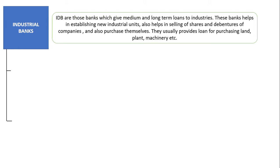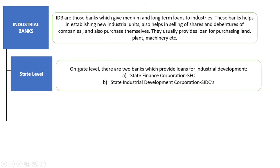At the state level, there are two banks that provide loans for industrial development: the State Finance Corporation (SFC) and the State Industrial Development Corporation (SIDC). These two banks provide loans for industries in terms of their development.